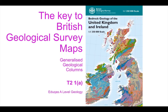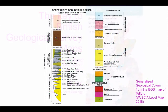This video is all about the keys used on British Geological Survey maps. They're called Generalised Geological Columns and they contain a wealth of geological information about the area represented on a geology map. It's important to understand how these geological columns convey information. This is an example taken from an exam map from 2018 — the Generalised Geological Column for the BGS map of the Telford area.